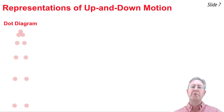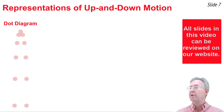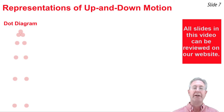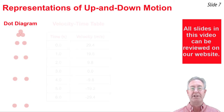Now let's look at representations of an up-and-down motion — an object thrown from ground level upwards that rises and then falls back down. In the dot diagram, as the ball rises the dot spacing decreases, it reaches its peak, and as it falls from its peak the dot spacing increases.